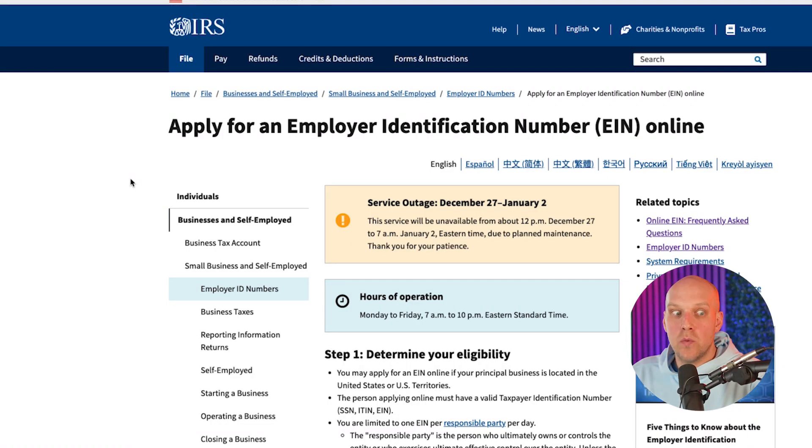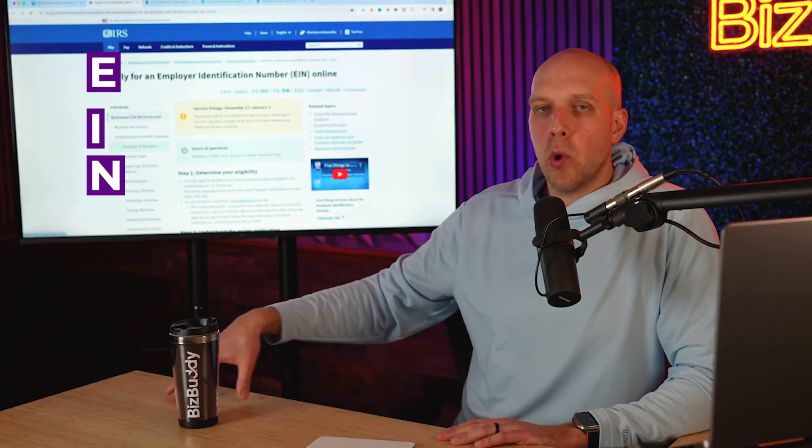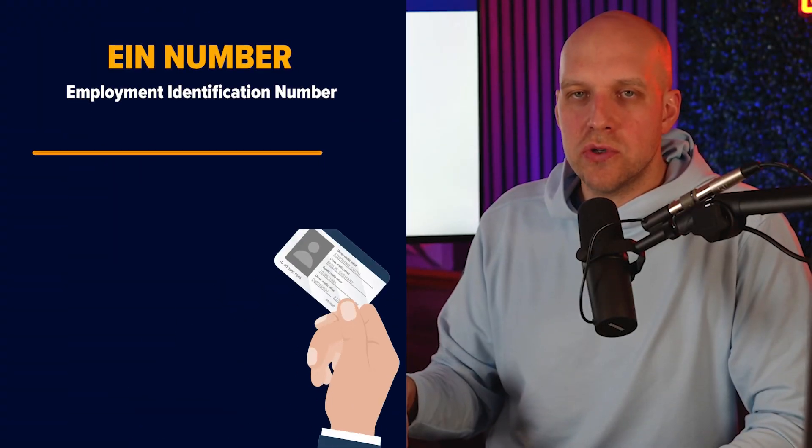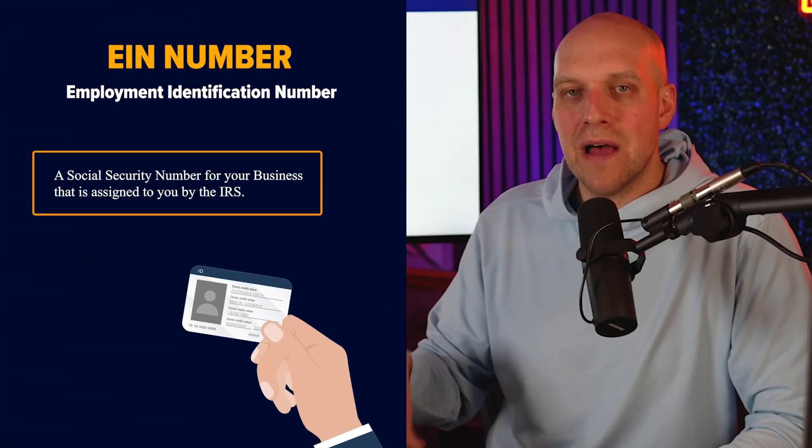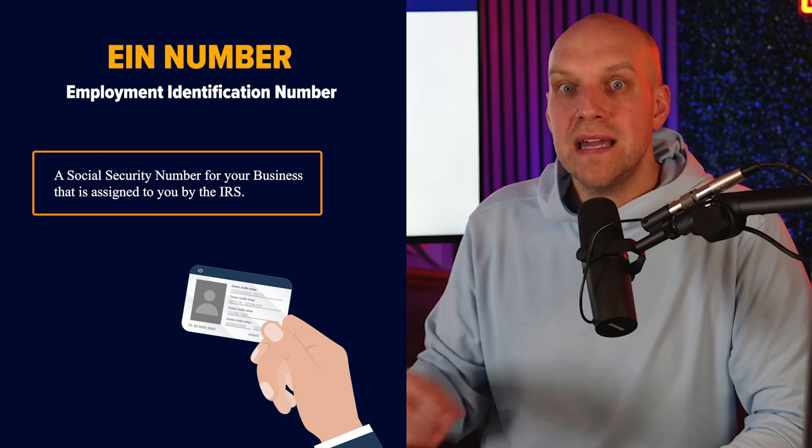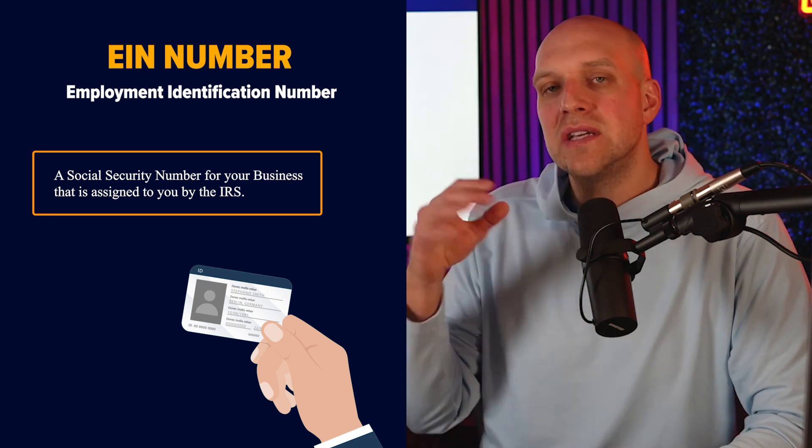After setting up your LLC, you can set up an EIN — an employer identification number, basically a social security number for your business that allows the IRS to identify it. It's not necessarily needed on day one, but I'd suggest taking care of it now since there's no annual fee. You'll need it once you have employees on payroll, and when applying for a bank loan it makes your business look more legitimate. Setting up your EIN right away is a good idea.